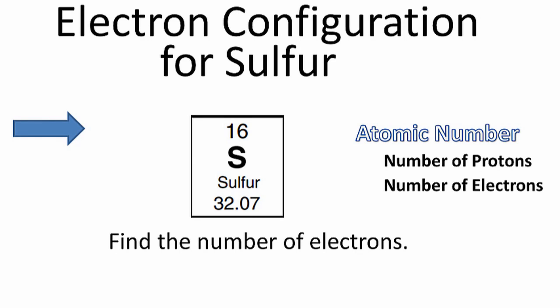To write the electron configuration for sulfur, we first need to find the number of electrons in the sulfur atom. We can do that by looking at the periodic table, finding sulfur, and looking at the atomic number.